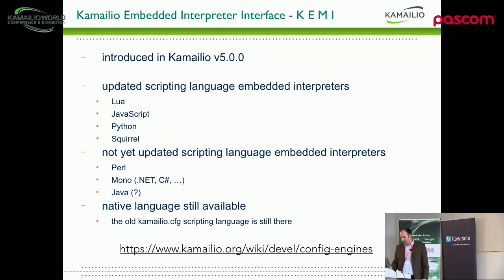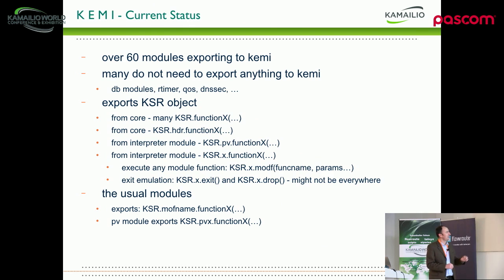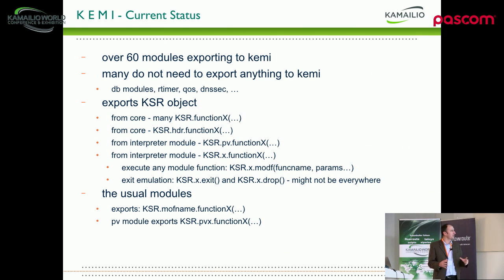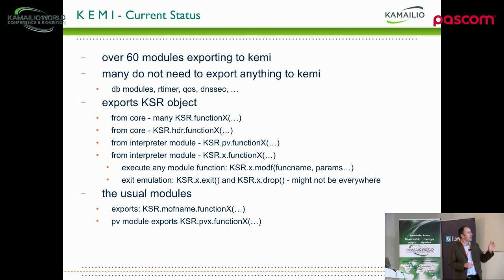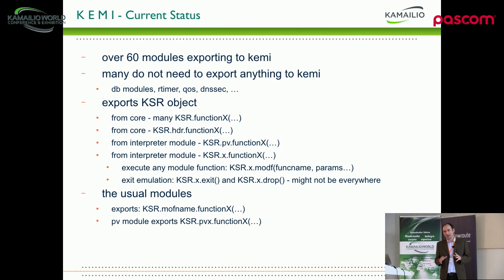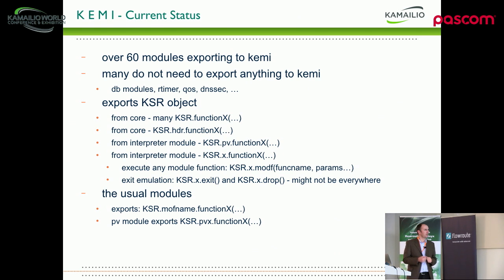There is a link where you can read more. The current state of the art: there are more than 60 modules exporting most of their functions to KEMI. The TM module is not completed because it has around 60 functions — I was thinking of removing some because they are kind of redundant. When we merged with SIP Express Router, we got two versions of functions to please the Kamailio and SER guys, but we can probably simplify that. My estimation is we are at about three-quarters of what we need to export.